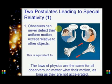So there are two postulates leading to special relativity. That observers can never detect their uniform motion except relative to other objects. And this is equivalent to: the laws of physics are the same for all observers, no matter what their motion, as long as they are not accelerated.